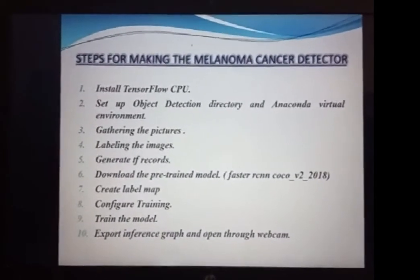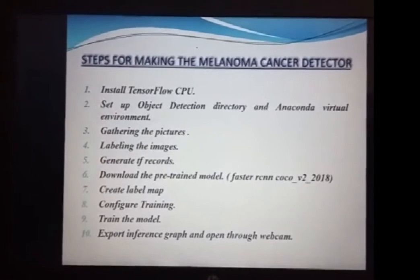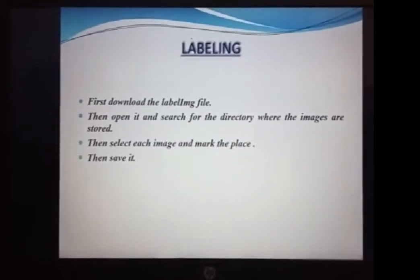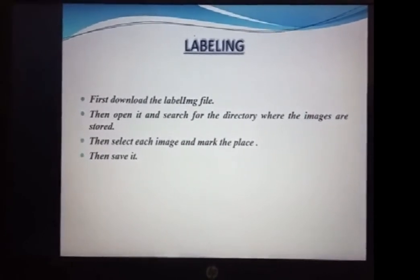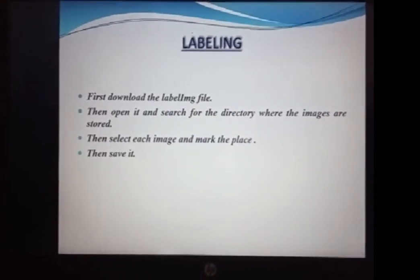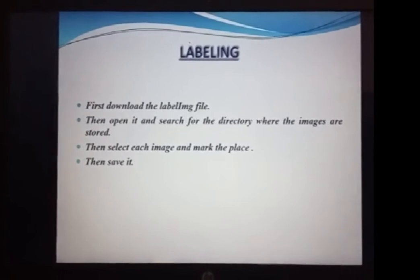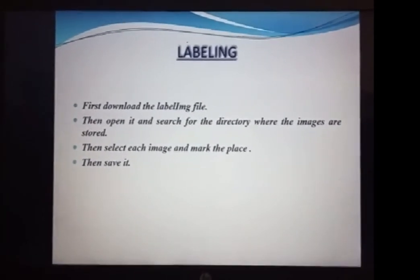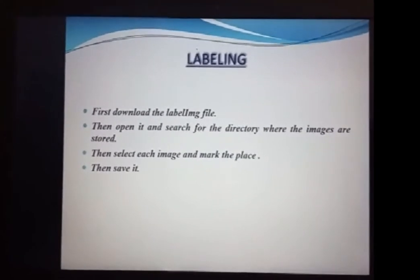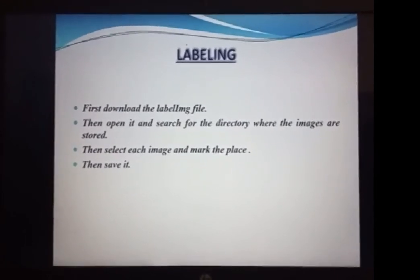After the model successfully completed its training process, we exported the inference graph, and finally ran our webcam.py file, which opened the webcam and started detecting objects successfully. In the labeling step, we labeled our downloaded image dataset using the Label Image software, fetching each image stored in our TensorFlow directory, marking the regions of interest, and saving XML annotations. The images are stored in a 90-to-10 ratio in train and test directories — 90% in train and 10% in test.